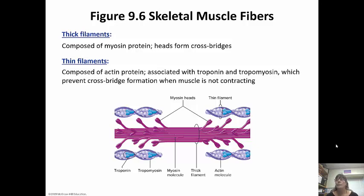The actin filaments look like a string of pearls and the blue in the picture are the troponin-tropomyosin complex. When the muscle is not contracting, the troponin-tropomyosin complex blocks the binding site. Once the muscle is going to contract, the troponin-tropomyosin complex moves out of the way and opens up the binding site so that the myosin head can fit right in there and bind.